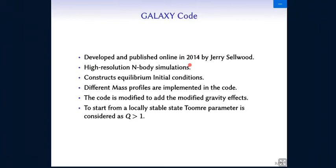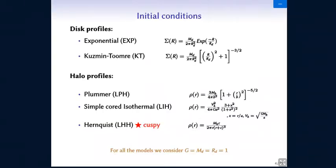And as you heard earlier, the code has been modified to add the effects of the modified gravity to study these models. And we need to consider the Toomre parameter Q to have values higher than one in order to avoid the local fragmentation in your disk. So you have to consider the Toomre parameter Q to have values higher than one.